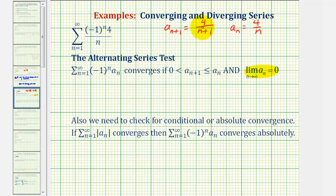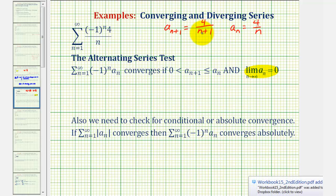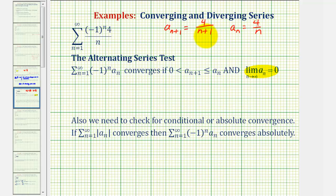So now we just need to make sure that a sub n plus one is always less than or equal to a sub n. If we take a look at these two fractions, notice how the numerators are the same constant, but the denominators are different — this denominator is always going to be one larger. When comparing two fractions with the same numerator, the fraction with the larger denominator is always going to be less than the fraction with the smaller denominator. As an example, let's consider when n is equal to five.